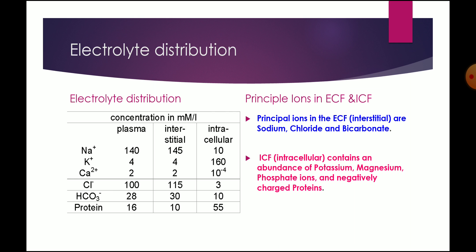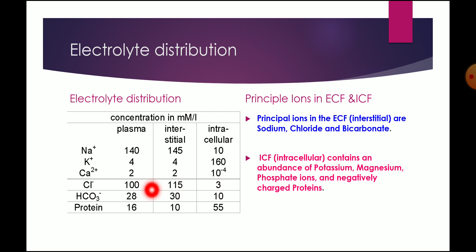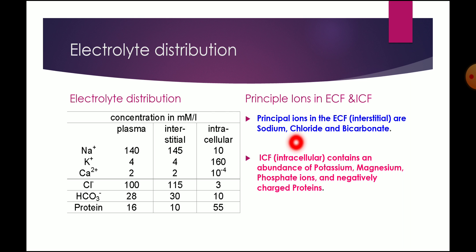In this table you can see the various values of sodium, potassium, calcium — which are the cations — and chloride, bicarbonate, protein — which are the anions — and how they are distributed in the plasma, interstitial fluid, and intracellular compartment. In the plasma and interstitial fluid, sodium is more, but potassium is more in the intracellular compartment. Similarly, bicarbonate is more in the plasma and interstitial fluid, and protein is more in the intracellular compartment.